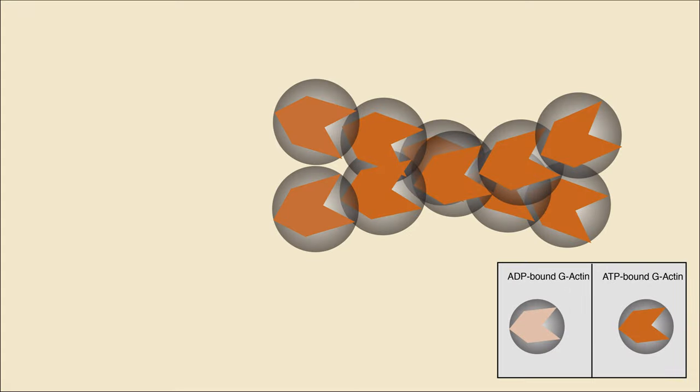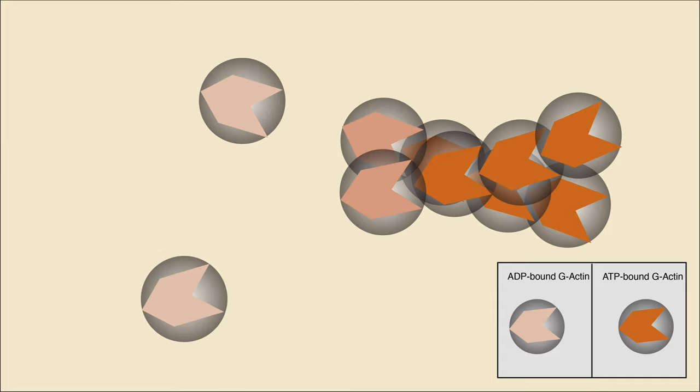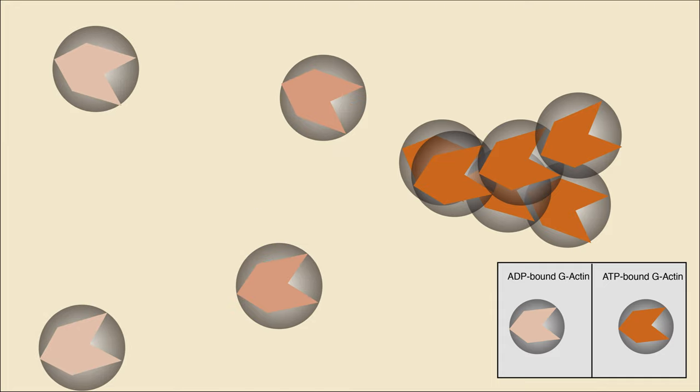G-actin is an ATPase, meaning it binds ATP and slowly hydrolyzes it to ADP. Only ATP-bound G-actin can be added to the plus end of a filament. ATP hydrolysis weakens the binding interaction of G-actin, so ADP-bound G-actin at the minus end dissociates.